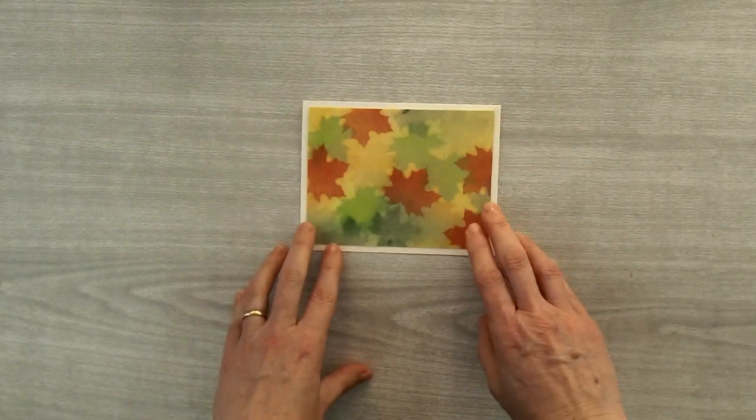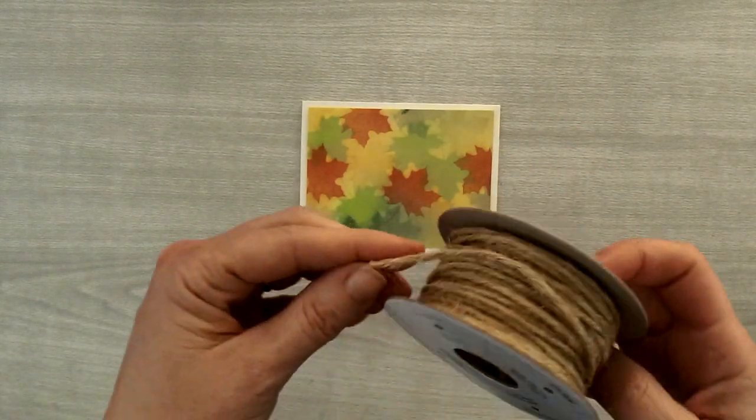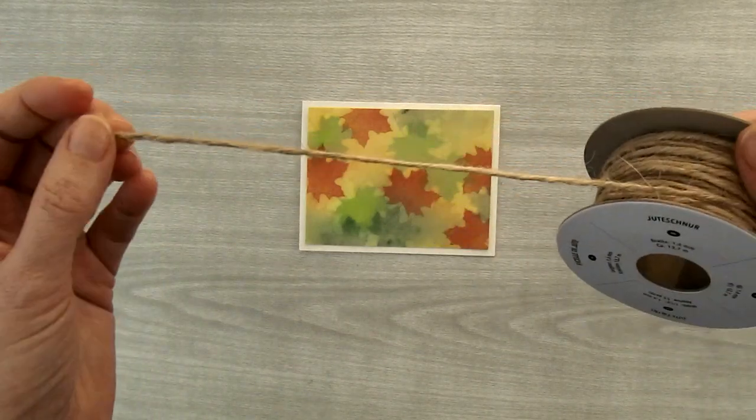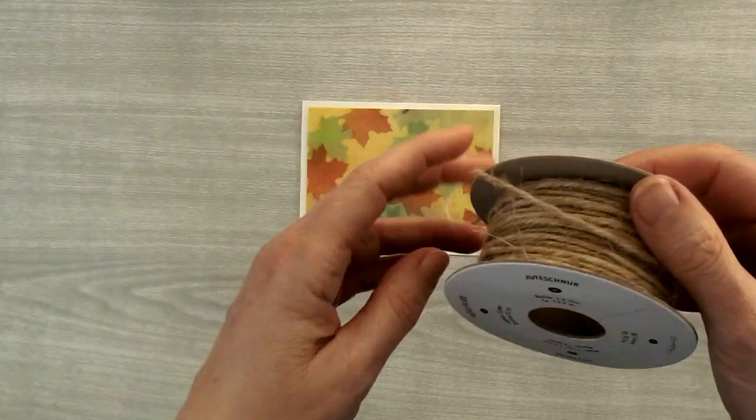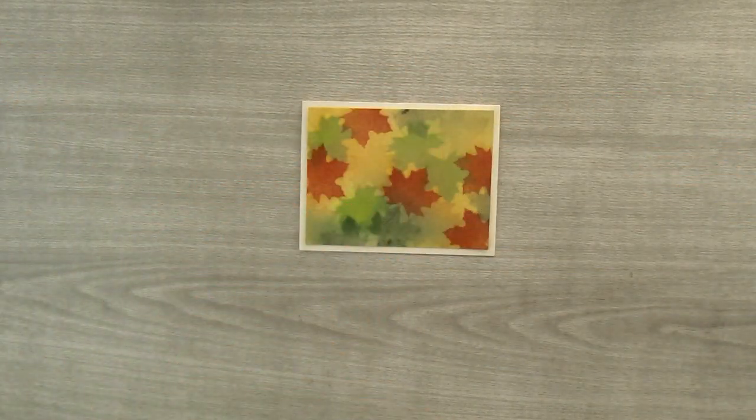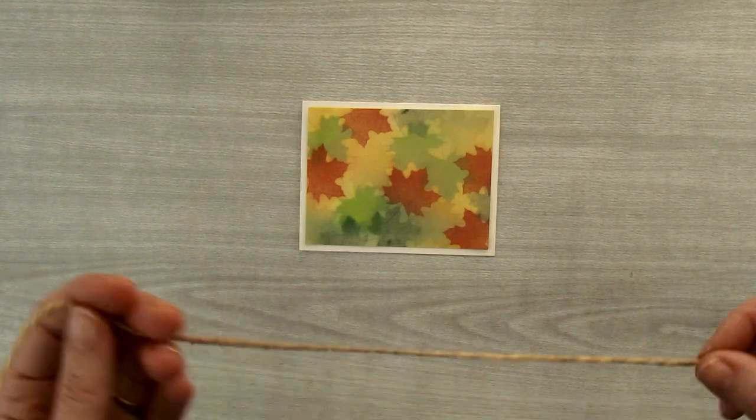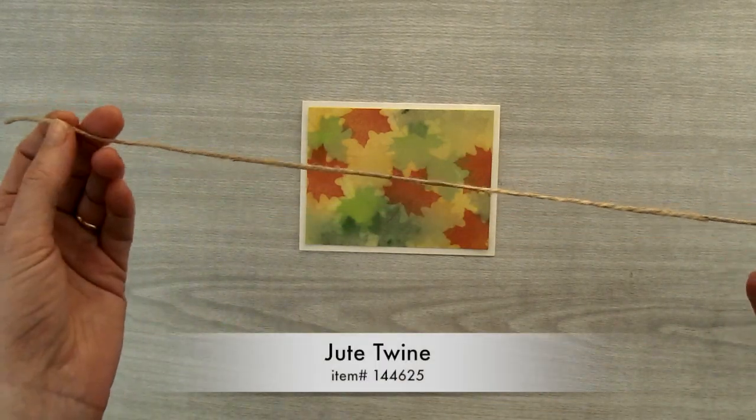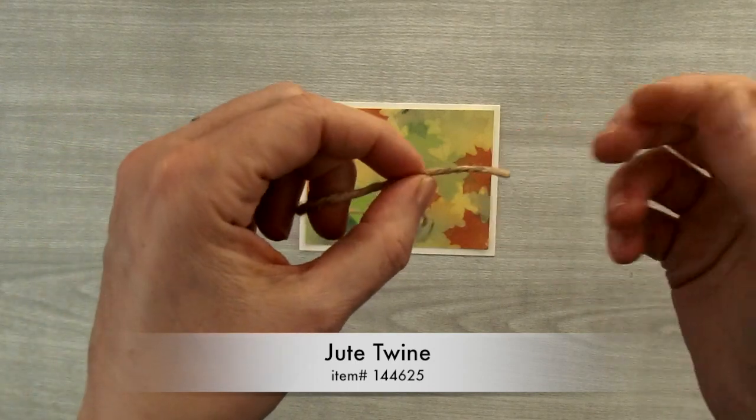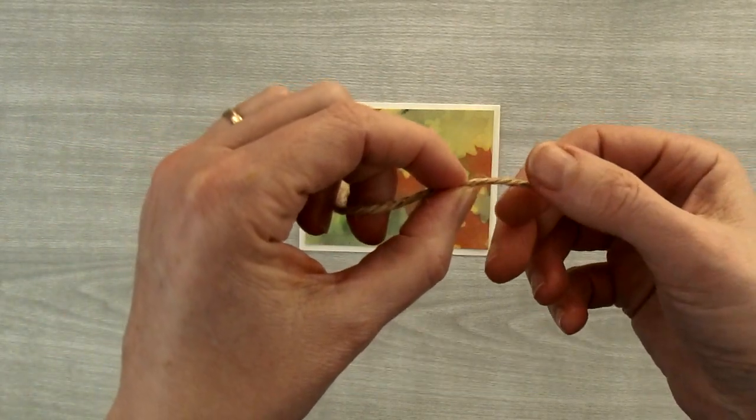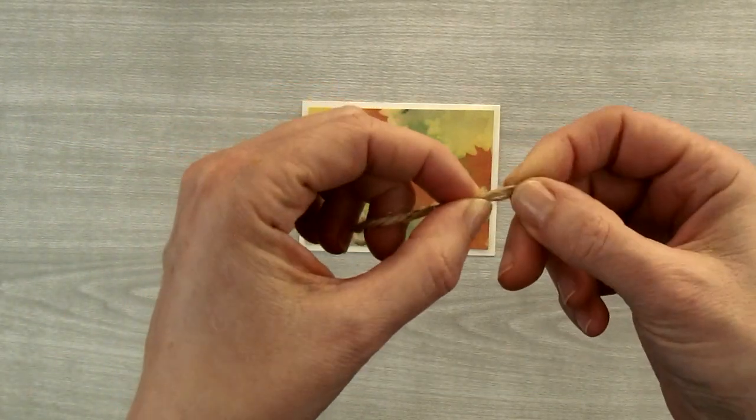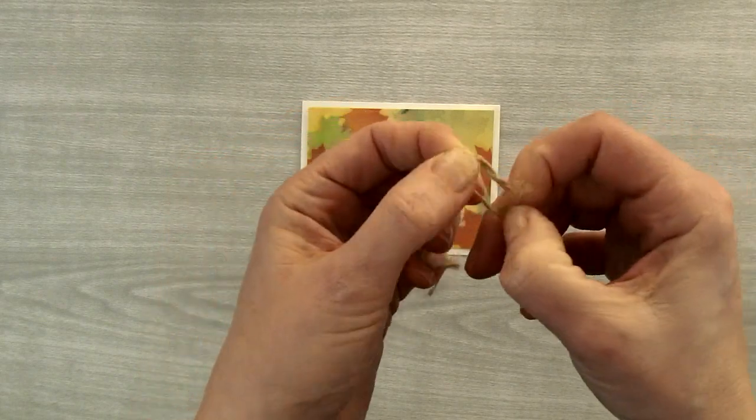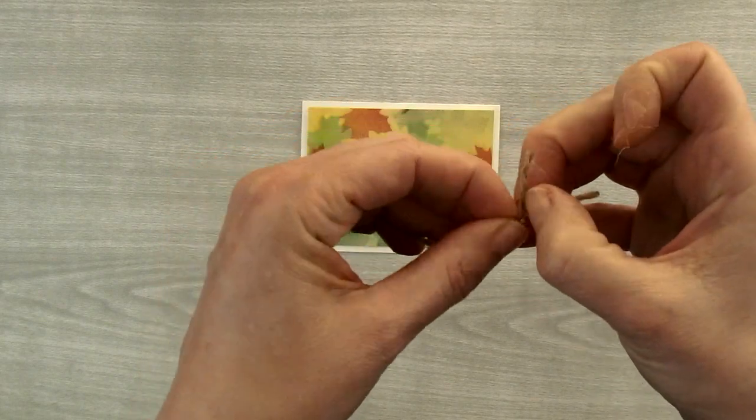Then I'd like to take some jute twine to tie around this piece. But I find that the jute twine is a little bit too thick and I kind of like to separate the strands. So I cut myself a piece of jute twine that is 16 inches long and I'm going to unravel it. I start by taking the end and untwisting the end until I've got some of these pieces that are starting to separate out.